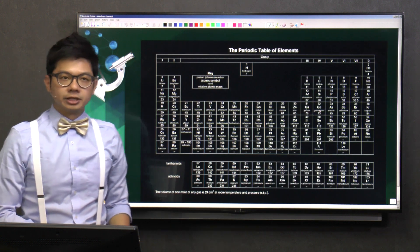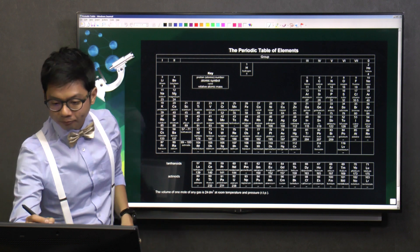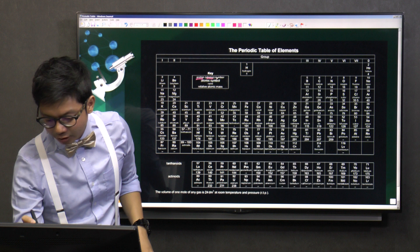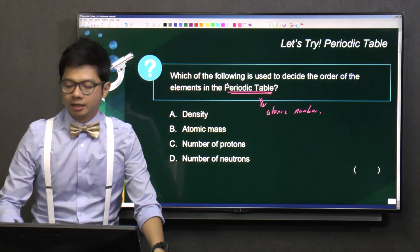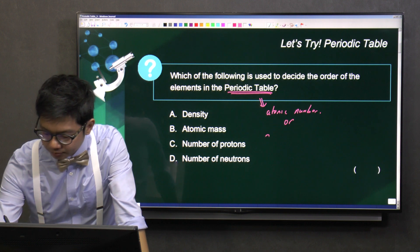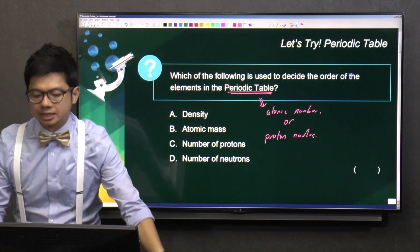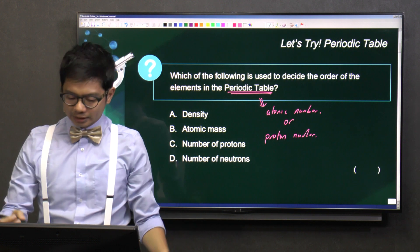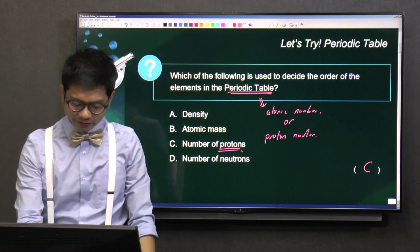Look at the legend here. Can you see that it's either atomic number or proton number? So proton number and atomic number, basically they are the same. And this proton number basically tells us the number of protons. So in this case, we can choose the answer C. Clear with this? Let's move on.